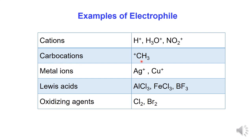Carbocation — example: CH3⁺ (methyl carbocation). Metal ions — example: silver ion and copper ion. Lewis acids, which are electron-pair acceptor molecules — examples: AlCl3, FeCl3, and BF3.